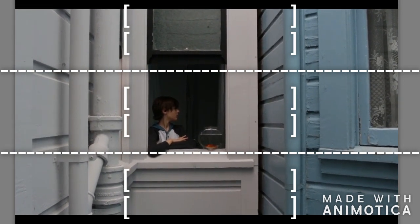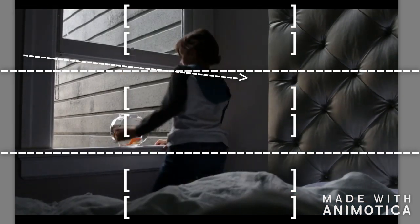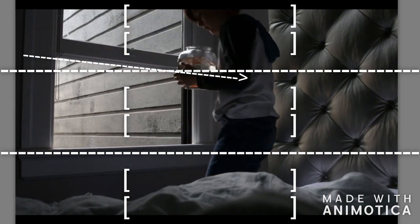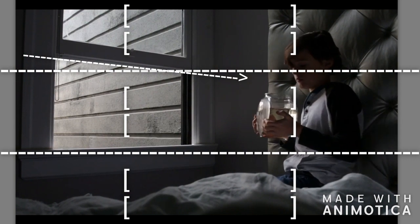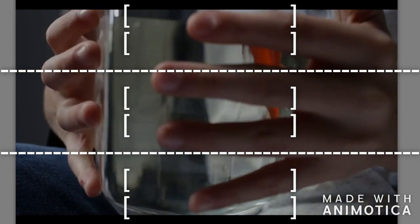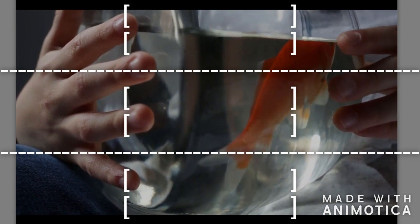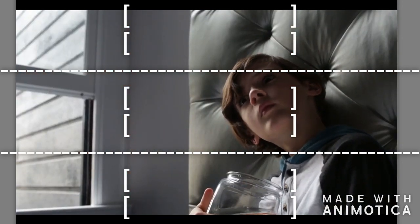This composition, if you'll notice as well, uses lines to point to the main subject matter. So a second ago, it was pointing to the kid in the window, all the lines of the walls. And now, once again, the lines of the wall, lines of the window pointing to the subject matter. Back to rule of thirds here. Rule of thirds.